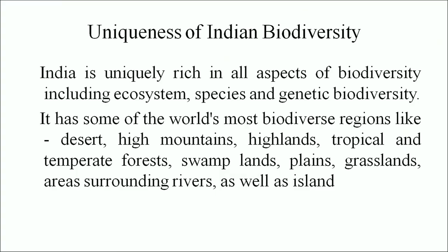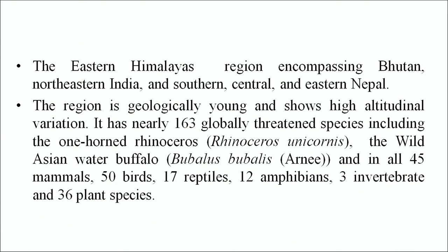Uniqueness of Indian biodiversity: India is uniquely rich in all aspects of biodiversity, including ecosystem, species and genetic biodiversity. It has some of the world's most biodiverse regions — deserts, high mountains, highlands, tropical and temperate forests, swamp lands, plains, grasslands, river areas and islands. The eastern Himalayas region, encompassing Bhutan, northeastern India and southern, central and eastern Nepal, is geologically young and shows high altitudinal variation. It has nearly 163 globally threatened species, including the 1-horned rhinoceros, wild Asian water buffalo, and in all 45 mammals, 50 birds, 17 reptiles, 12 amphibians, 3 invertebrates and 36 plant species.